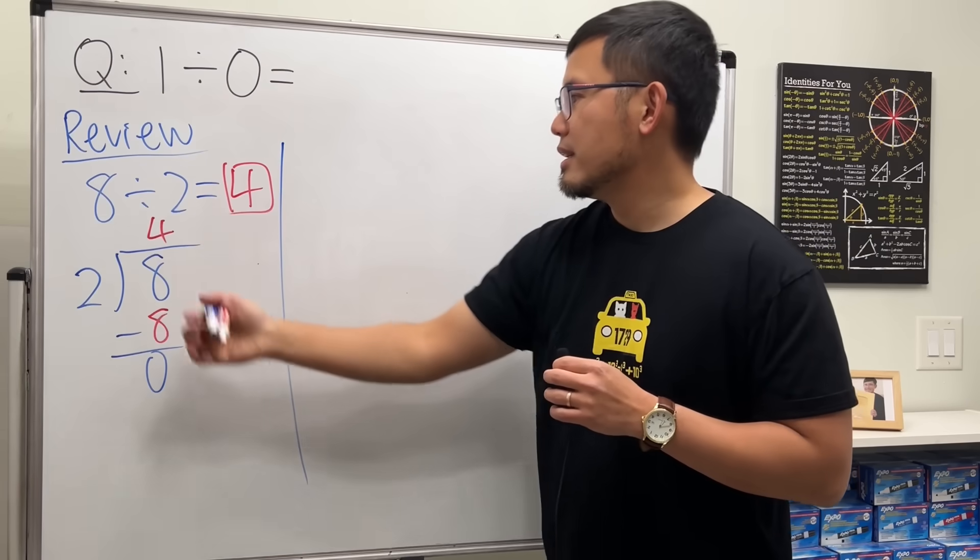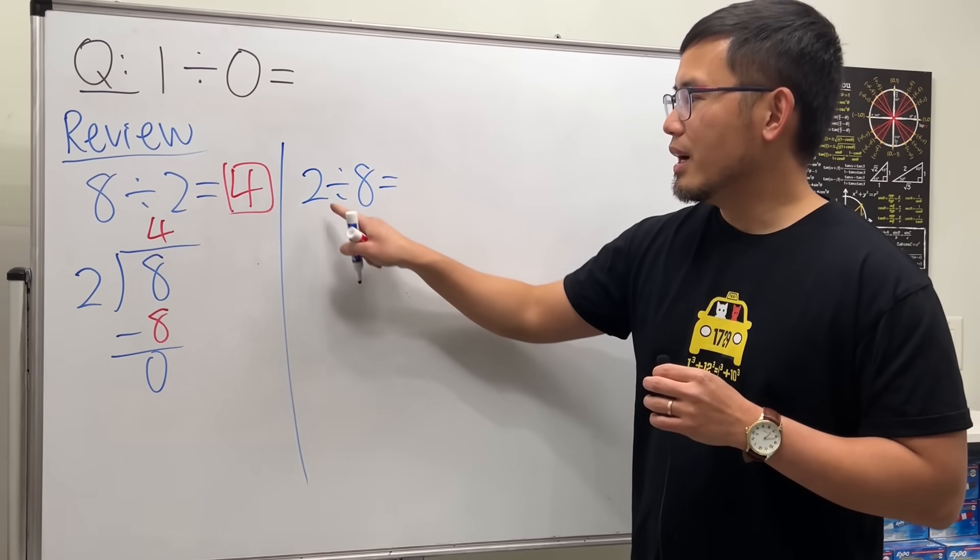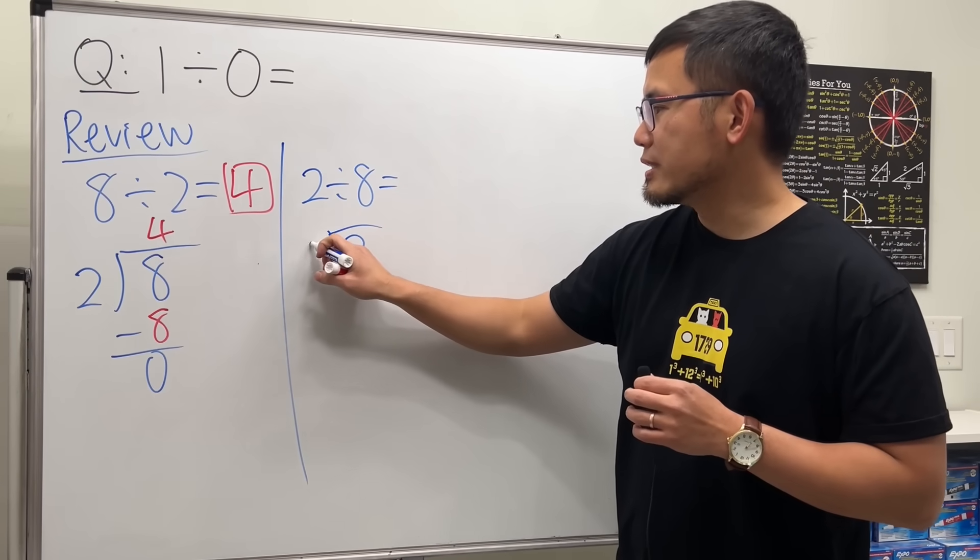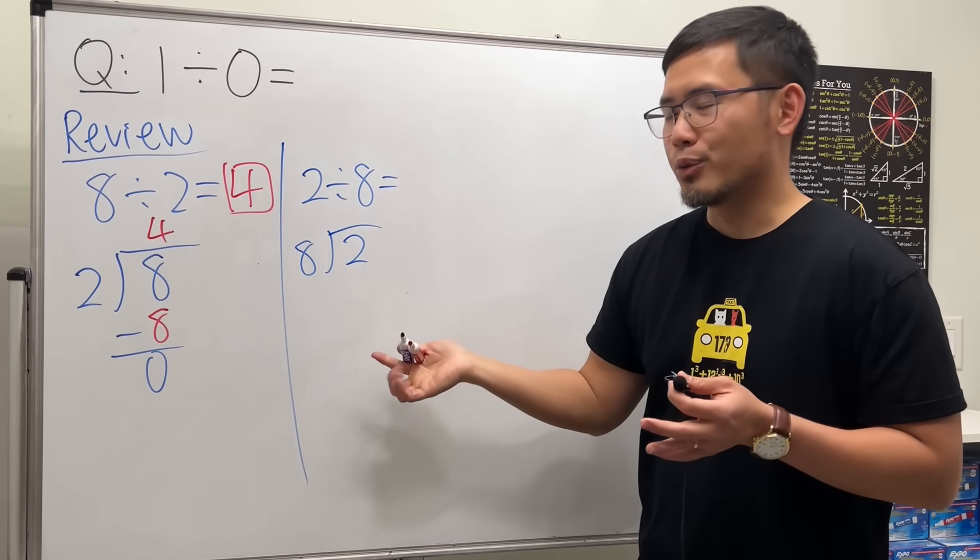All right, let's switch places. If we have 2 divided by 8, what do we do? Again, long division. Put the 2 inside, and then put the 8 on the outside. This time though, 8 goes into 2 how many times? Well, no, right? So 0 times.